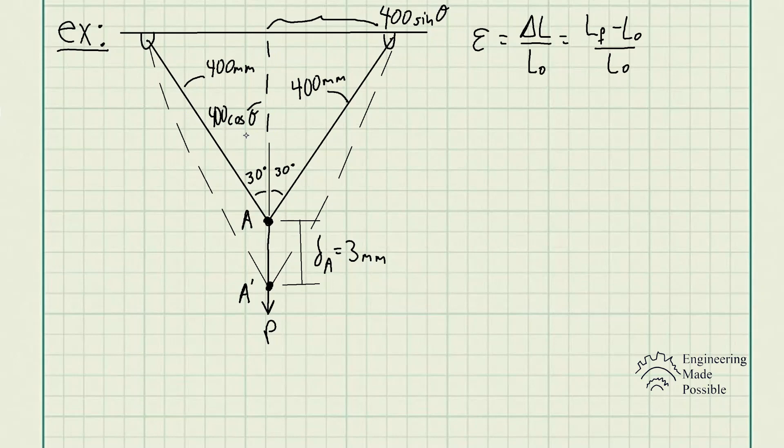This length of the triangle is 400 cosine theta, this length is 400 sine theta, and we know this 400 is the original length. Now the final length that we're trying to solve for is this dashed line—this will be the final length. So now let's focus on the larger triangle here.